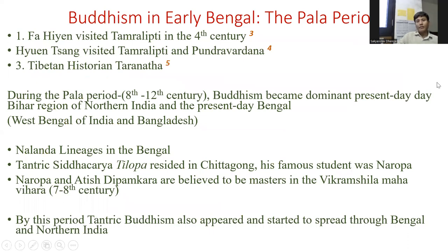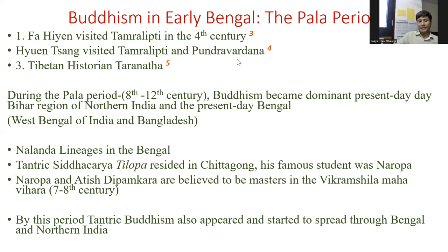During the Pala period, 8th to 12th century, Buddhism became dominant in present day Bihar as well as present day Bengal, which includes West Bengal of India and Bangladesh. Faxian visited the region in the 4th century and Xuanzang visited in the 7th century. Xuanzang covered both Tamralipti, in West Bengal of India, and Pundravardana, in present day Bangladesh. Tibetan historian Taranatha also gave important accounts for Buddhism in early Bengal.